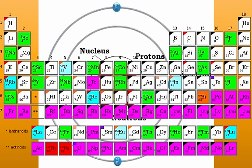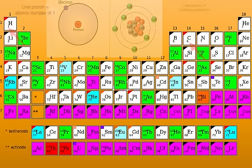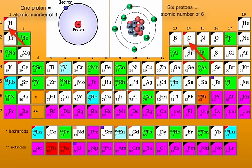An element is a pure chemical substance consisting of a single type of atom, distinguished by its atomic number, which is the number of protons in its nucleus. Thus, elements are determined by the atomic number of an atom. The atomic number is the number of protons, so the fewer the protons, the smaller the element.